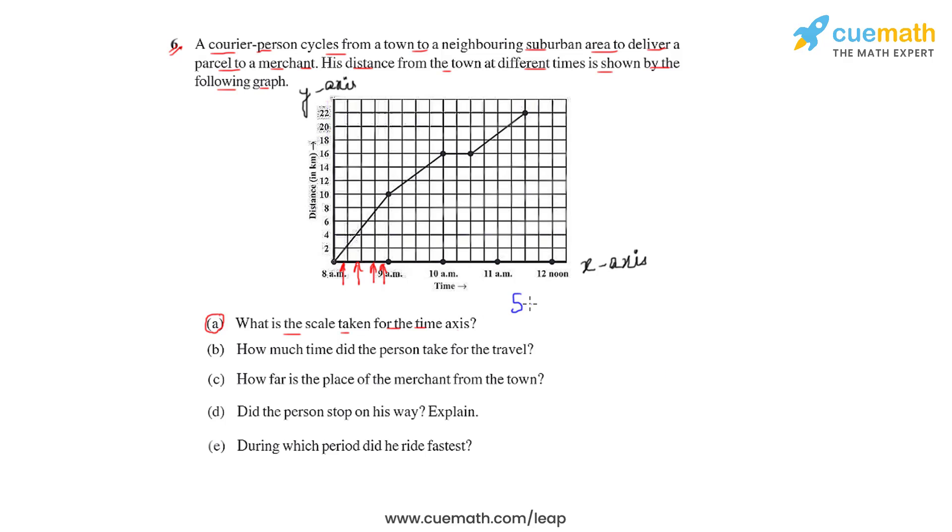To write the scale of the time axis, we can say that the scale of this line graph of the time axis is four units, as a set of four units represents one hour. So this is the scale of this time axis.